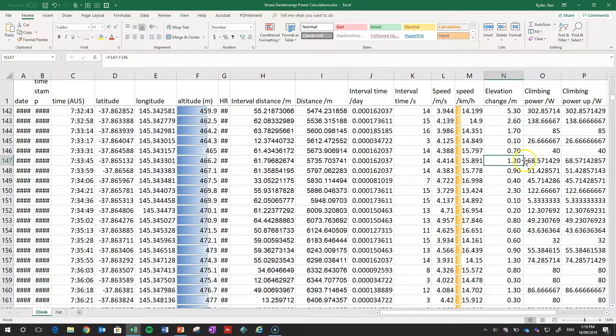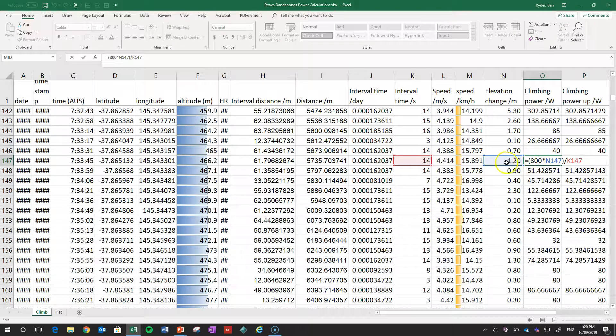Now that means my climbing power is going to be my elevation change multiplied by my mass about 80 kilos for me and my bike times by g of 10 is 800 times by 1.2 meters divided by 14 seconds gives in that particular time frame an average power of about 70 watts.